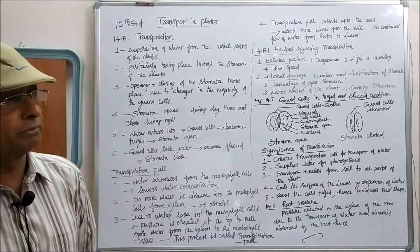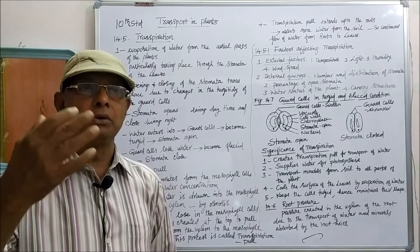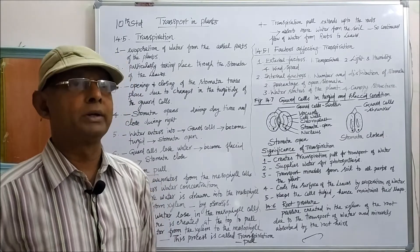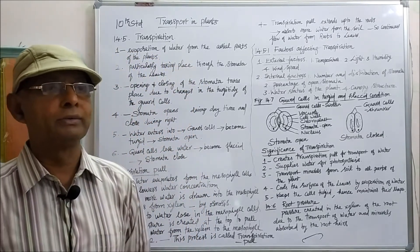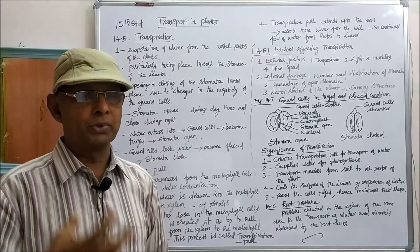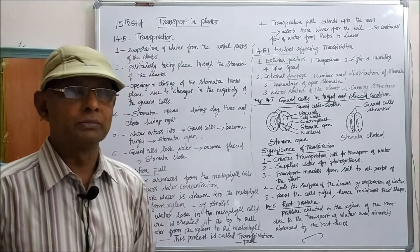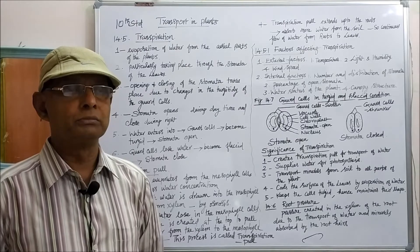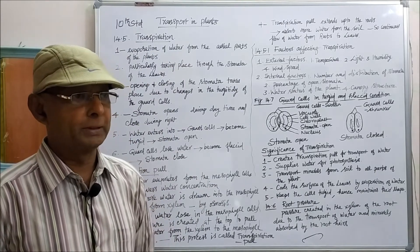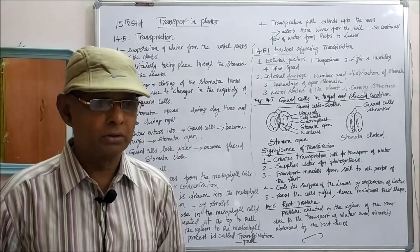What is transpiration pull? When continuous evaporation of water takes place through the stomata of the leaves, there is a loss of water in the mesophyll tissue. That is why a pressure is created in the mesophyll tissue, which draws water molecules from the stem, and from the stem, water moves towards the mesophyll cells of the leaf. That suction pressure created in the mesophyll tissue of the leaf is called transpiration pull.